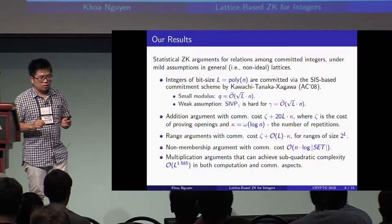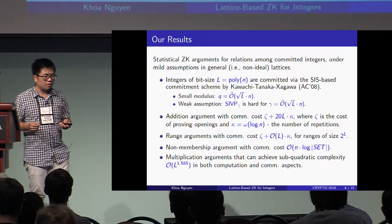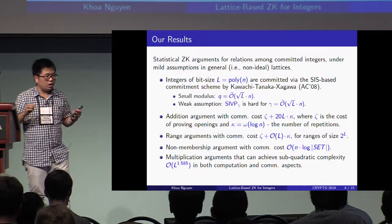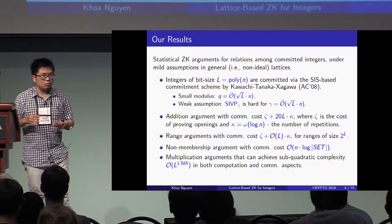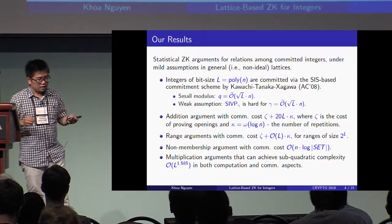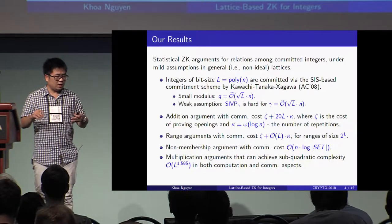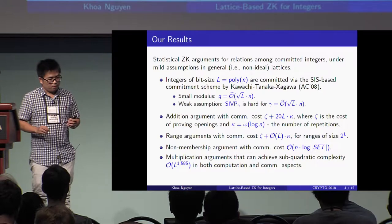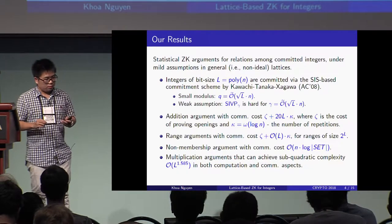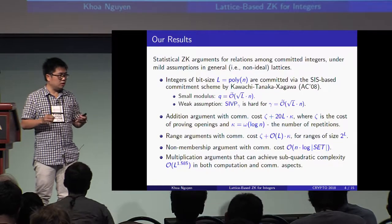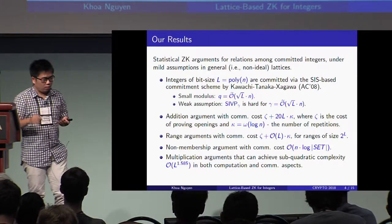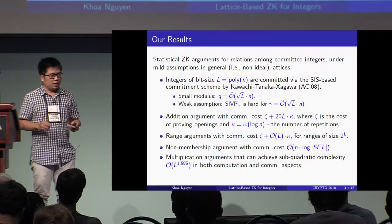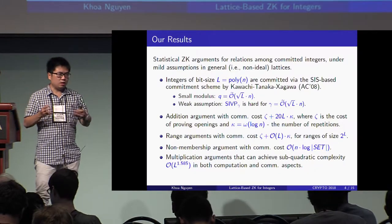Our addition argument has communication cost Zeta plus O(L times Kappa), where Zeta is the cost of proving knowledge of a valid opening for the commitment, and Kappa is the number of protocol repetitions to achieve negligible soundness error. Our range argument has communication cost Zeta plus O(L times Kappa) for range of size 2^L — so it is logarithmic in the size of the range. Similarly, our non-membership argument is also scalable with communication cost logarithmic in the size of the set, and for multiplication we have a variant achieving sub-quadratic complexity in both communication and computation.